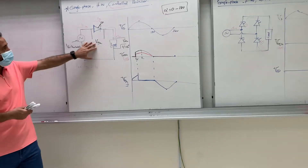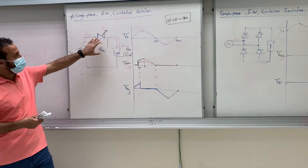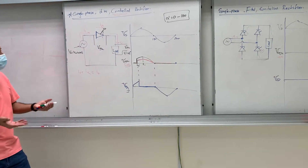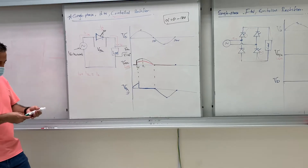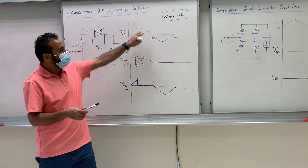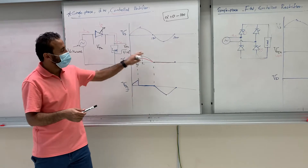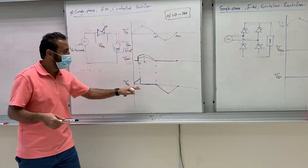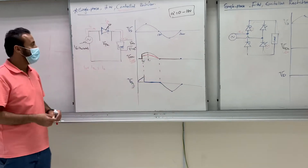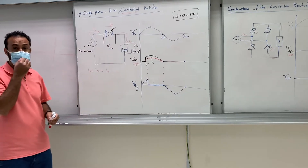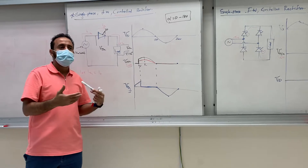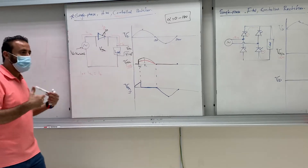This is the half-wave circuit: this is the source, this is the thyristor, and this is the load. We want to control the circuit. Before, in the half-wave uncontrolled rectifier, we had the source, the diode, and V_diode on the negative side. Now we will introduce alpha, which is the firing angle.